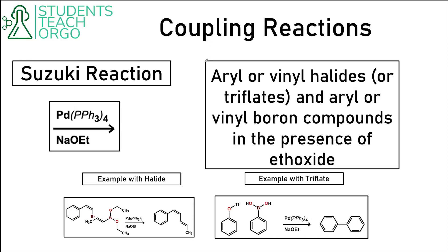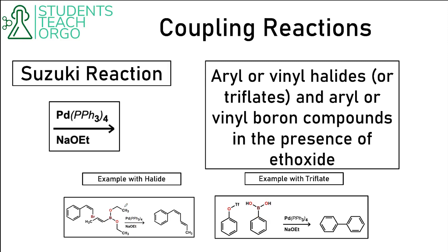The next coupling reaction is the Suzuki reaction. We still have the palladium catalyst, but importantly, anytime you see ethoxide, we know it's going to be the Suzuki reaction. The Suzuki reaction still uses an aryl or vinyl halide or triflate, but it also uses an aryl or vinyl boron compound. The boron can be connected to two OH groups, O-ethyl groups, or oxygen with a methyl group. For organic chemistry 2, any of these boron compounds will act the same in a Suzuki reaction.